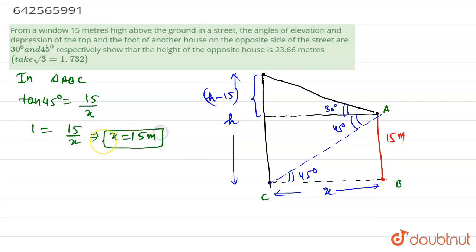We have the value of x. Now in this triangle which is APQ, tan 30 is 1 by root 3 equals h minus 15 upon x.